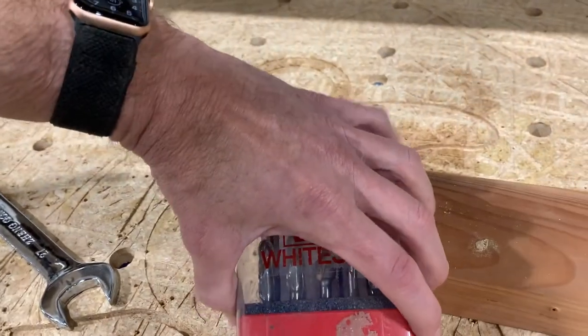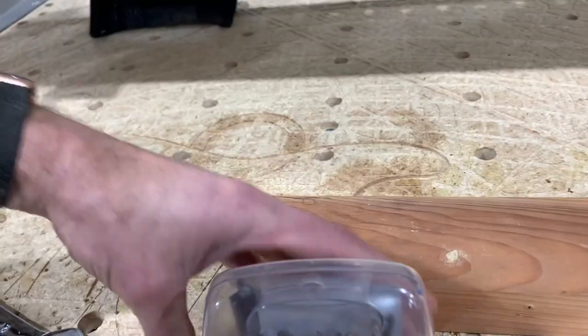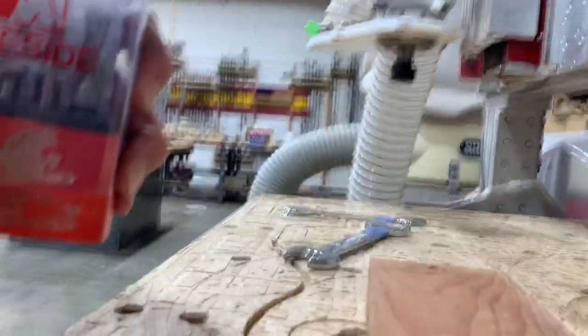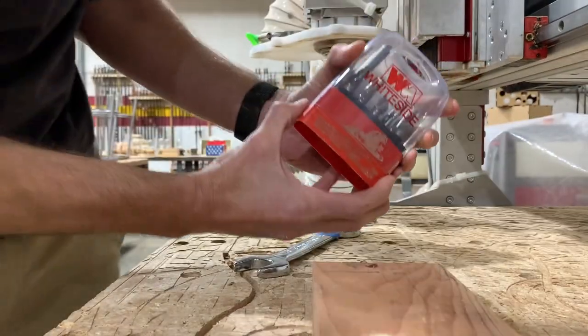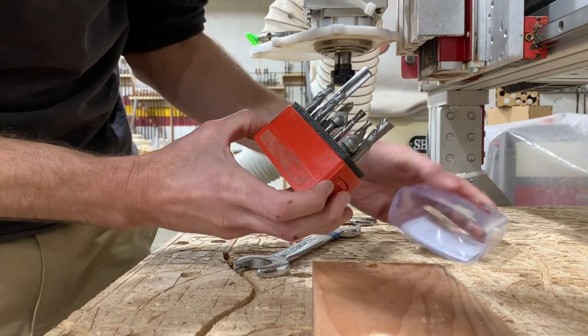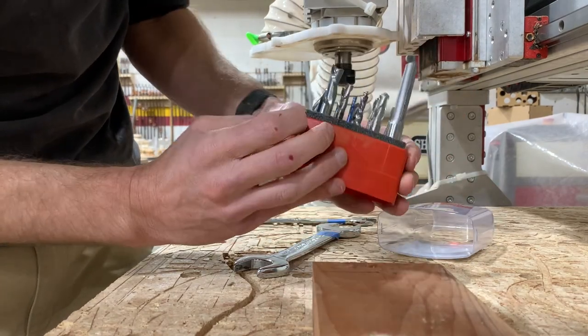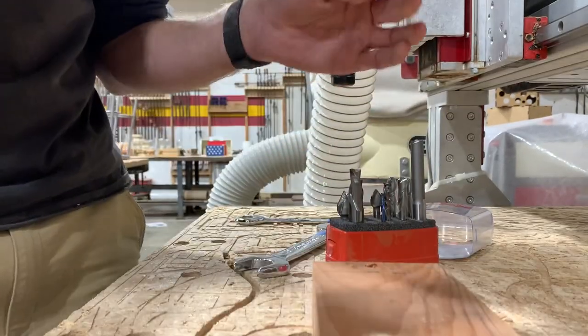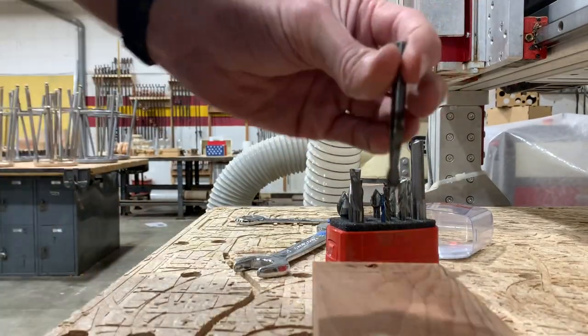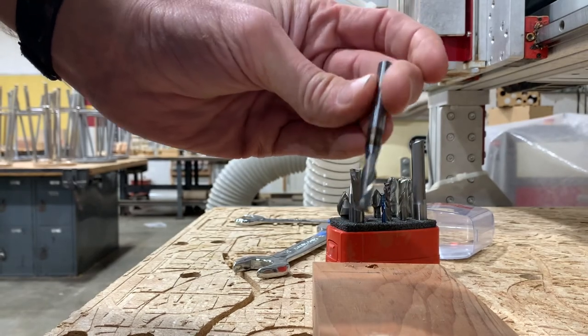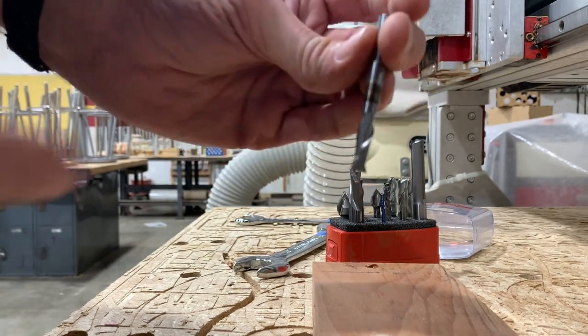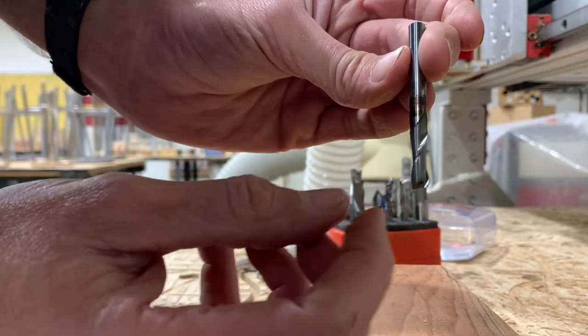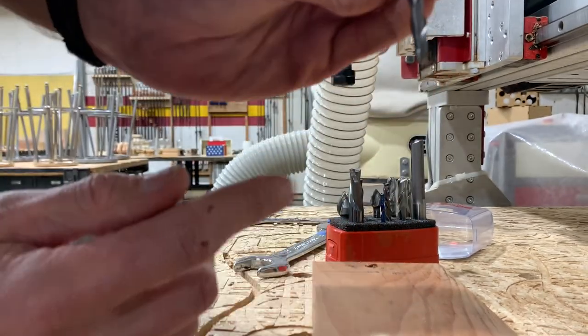Now I'm going to pick my end mill. Alright, I'm looking for a quarter inch end mill. This is an up cut. I'll talk about up cut, down cut in another video. This is a quarter inch diameter, two and a half inches long. Up cut bit, which is good for this. I'm going to put this in here.